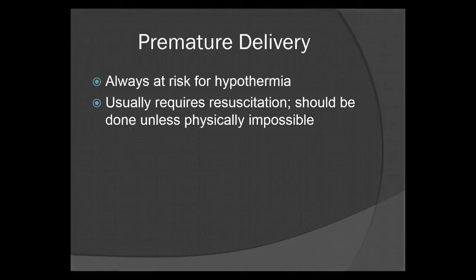Premature deliveries are always at risk for hypothermia — the babies are smaller, their bodies have not fully developed, making it more difficult for them to regulate body temperature. Premature deliveries also usually require resuscitation. If you can absolutely avoid a premature delivery, do everything physically possible to hold it off in the field. These are very difficult deliveries, and the resuscitations are even more difficult.